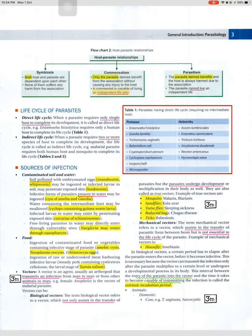Life cycle of parasites — direct life cycle: when a parasite requires only a single host to complete its development, it is called a direct life cycle. For example, Entamoeba histolytica requires only a human host to complete its life cycle. Indirect life cycle: when a parasite requires two or more species of host to complete its development, the life cycle is called an indirect life cycle. For example, the malarial parasite requires both a human host and a mosquito to complete its life cycle.